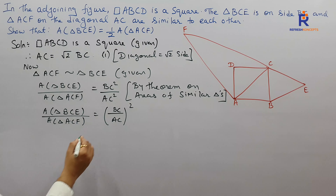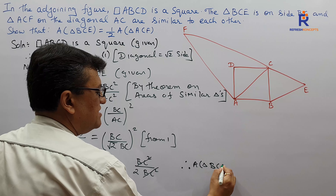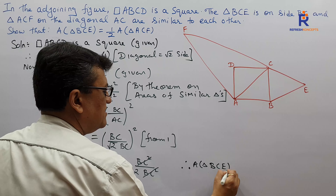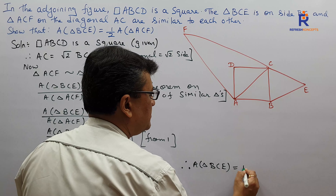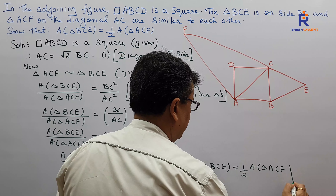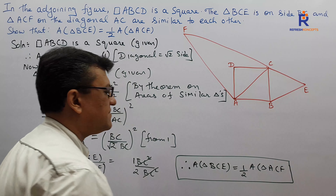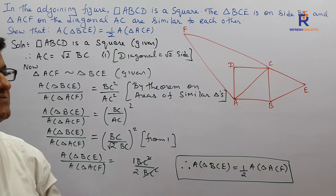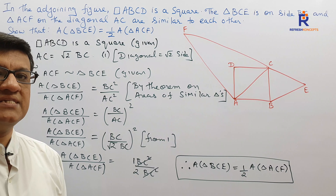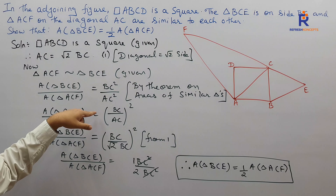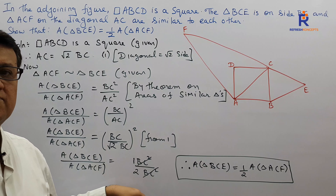Therefore, area of triangle BCE upon area of triangle ACF equals 1 by 2. Cross-multiplying, area of triangle BCE equals half the area of triangle ACF — which is exactly what we wanted to prove. The key steps were: recognizing the similar triangles, applying the theorem on areas of similar triangles, and using the relation that in a square, the diagonal is root 2 times the side.